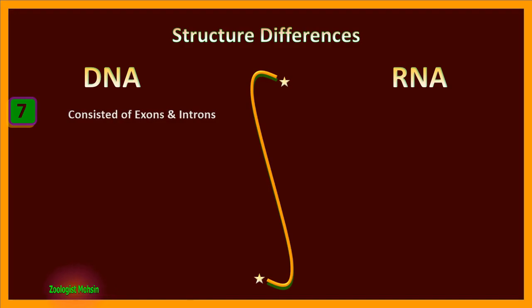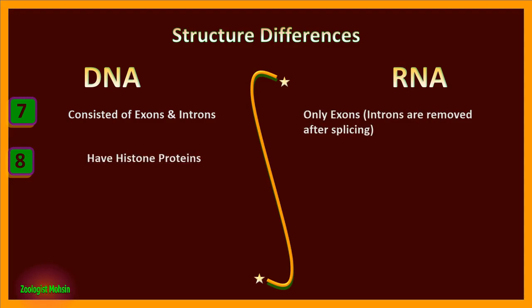Structure differences. DNA structure consists of exons and introns - coding and non-coding both portions - while RNA strand contains only exons. Introns are removed after splicing.